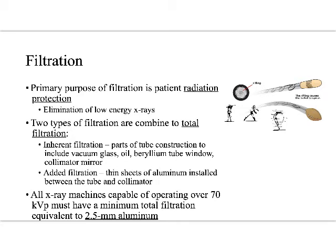You'll see all sorts of distracting questions about filtration, and hopefully you'll remember: it is just for radiation protection. There are two types of filtration combined to form total filtration. Inherent filtration comes from the parts of the tube itself — the oil, the beryllium window, the collimator mirror — all of which can filter out weak x-rays. That's inherent because it's part of the way the machine is designed and built.